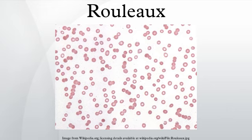They occur when the plasma protein concentration is high, and because of them the ESR is also increased. This is a non-specific indicator of the presence of disease. Conversely, the presence of Rouleaux is a cause of disease because it will restrict the flow of blood throughout the body, as capillaries can only accept free-flowing singular and independent red blood cells.